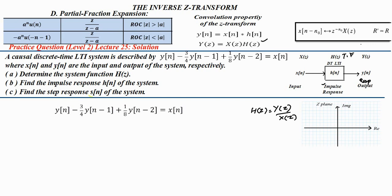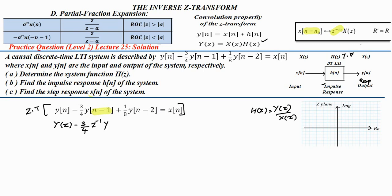We need to find a relationship between Y(z) and X(z). The given difference equation is: y(n) minus 3/4 y(n-1) plus 1/8 y(n-2) equals x(n). Taking the Z-transform and applying the time-shifting property — if there is a signal x(n - n0), we can write z^(-n0) times X(z) — the equation becomes Y(z) minus 3/4 z^(-1) Y(z) plus 1/8 z^(-2) Y(z) equals X(z).